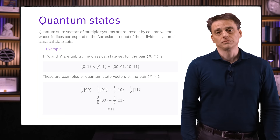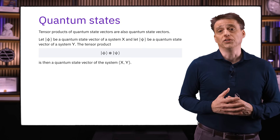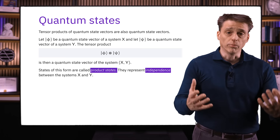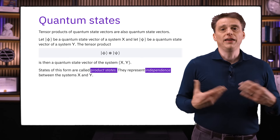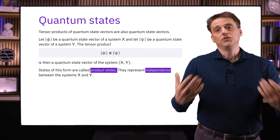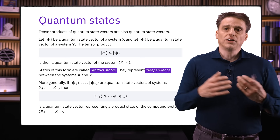Tensor products of quantum state vectors are also quantum state vectors. If phi is a quantum state vector of X and psi is a quantum state vector of Y, then the tensor product phi tensor psi is a quantum state vector of X, Y — called a product state, representing independence between X and Y. So if one person initializes system X to quantum state phi and another person independently initializes system Y to quantum state psi, then the compound system X, Y is in the state phi tensor psi. This generalizes: for n separate systems with quantum states psi_1 through psi_n, the tensor product of these n vectors is a product state of the compound system.